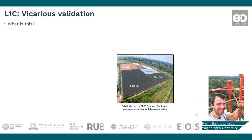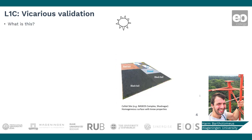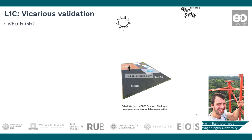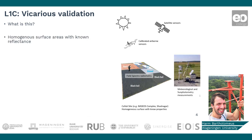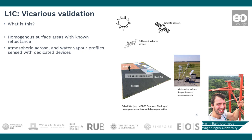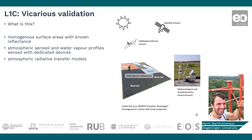Vicarious validation is used to validate the radiance measurements of the satellites. This implies that a regular comparison is made between the values recorded by the satellite and measurements done on the ground. For this, large homogeneous areas are used, and surface and atmospheric conditions are measured close to the moment of the satellite overpass. Based on these measurements, the top-of-atmosphere reflectance can be modeled and compared to the satellite measurements.